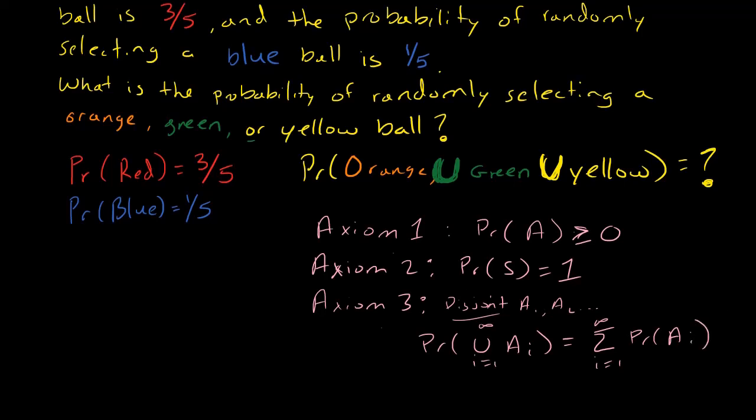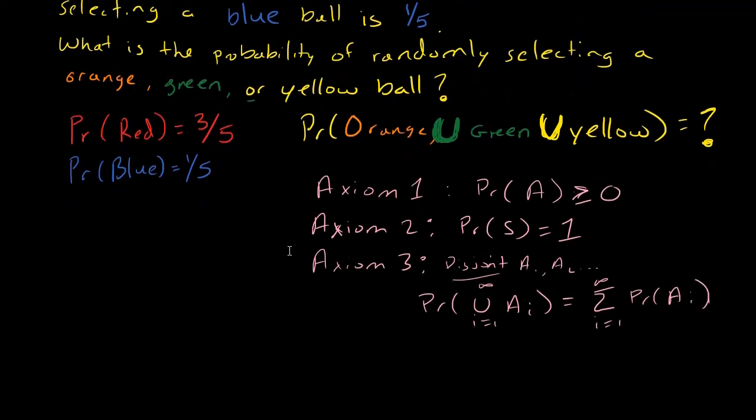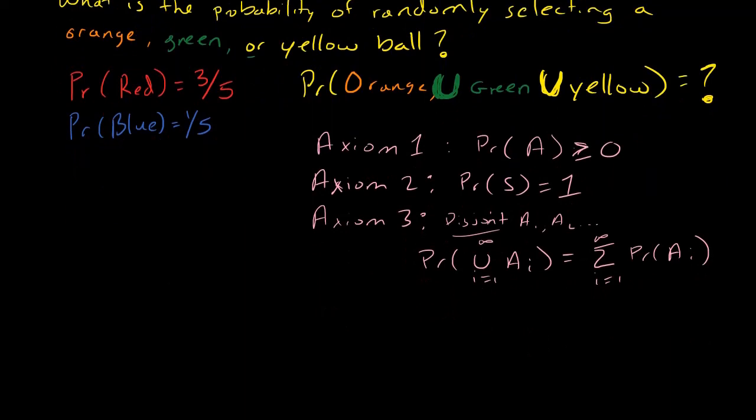All right, so I want to use these axioms to solve this question. How am I going to do that? Well, let's start with axiom 2, which says that total probability is 1.